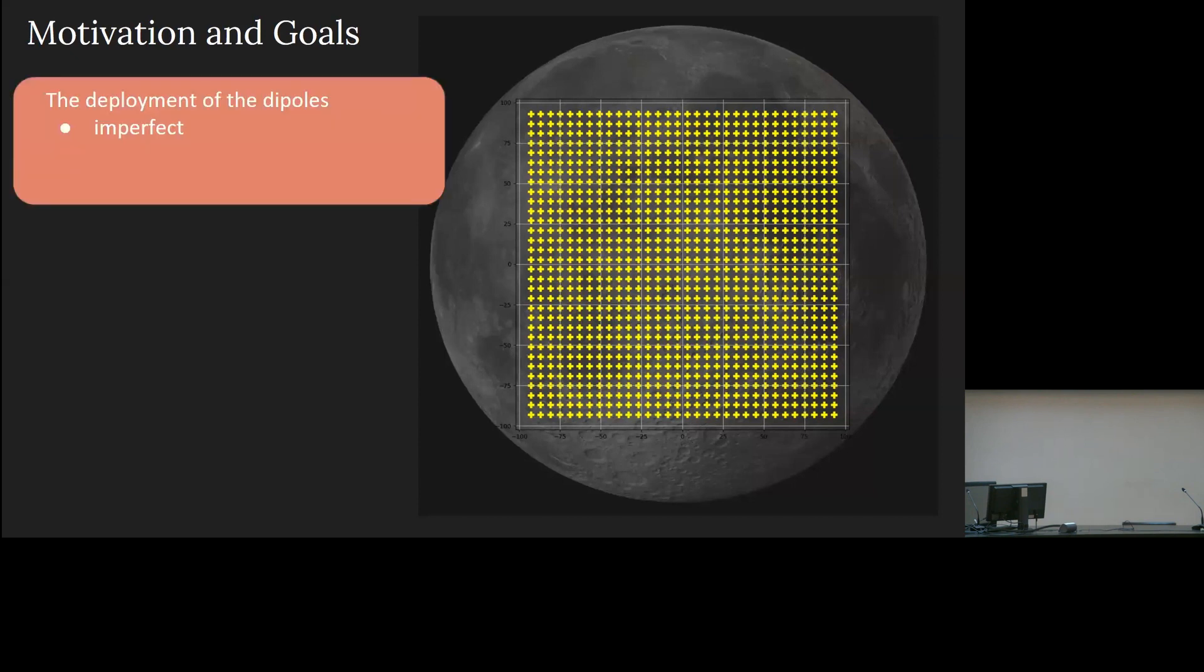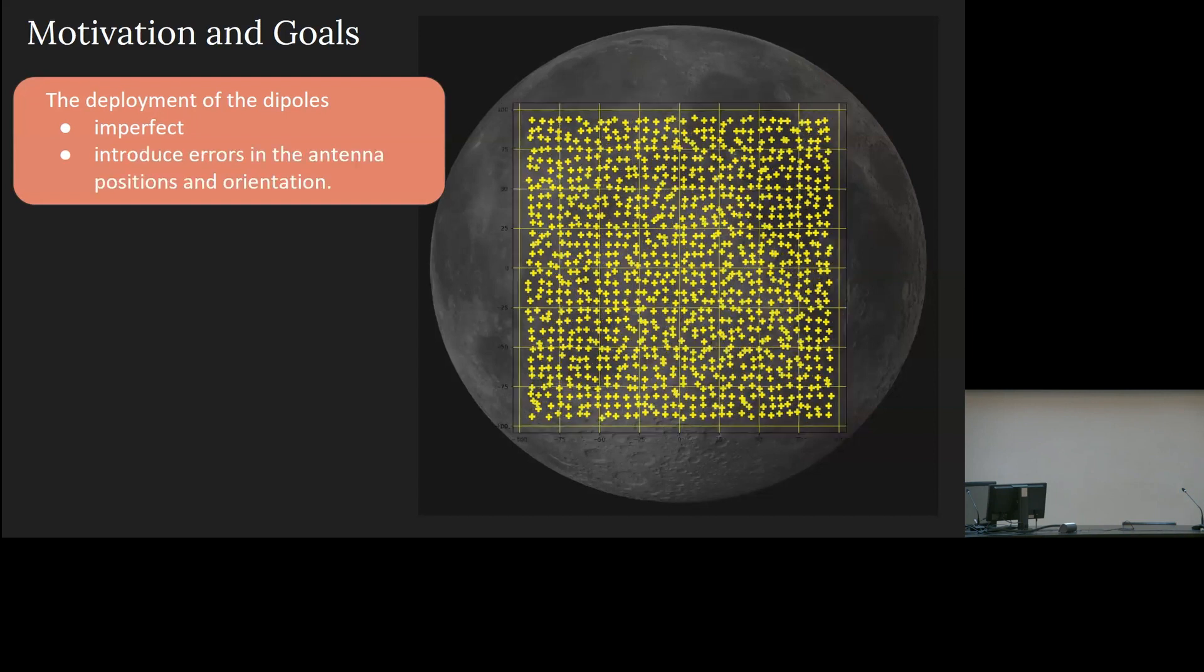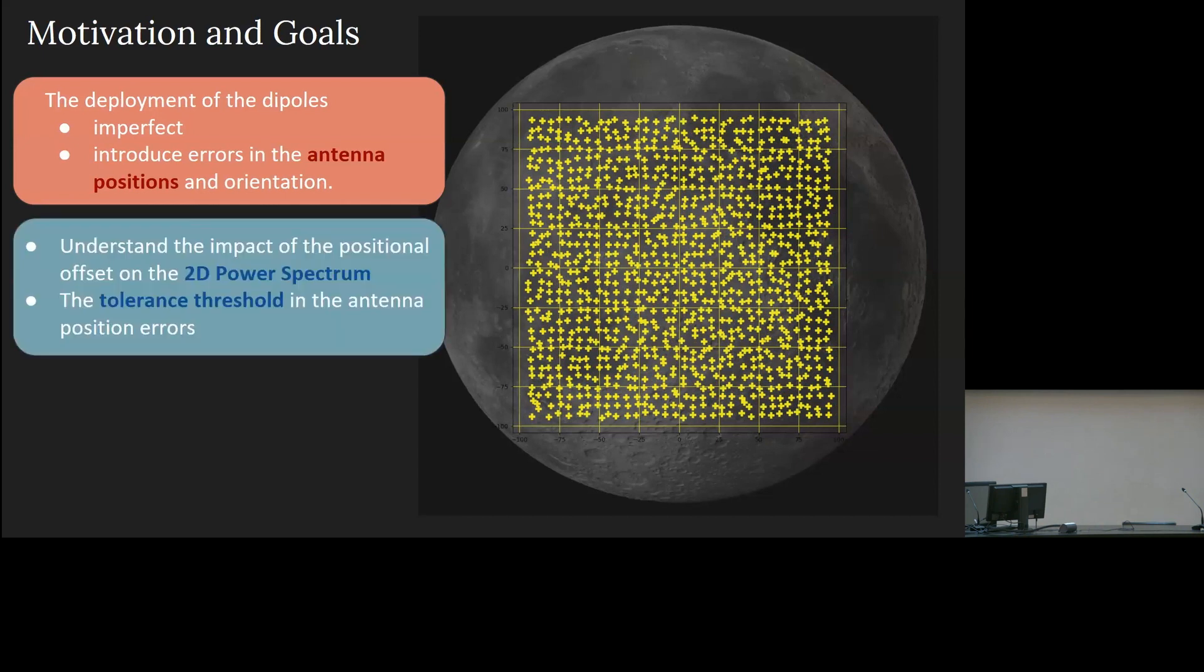And that is where my work comes into picture. We know in realistic scenario that the deployment of the dipoles on the lunar surface might be flawed, and that might introduce errors in the antenna position and orientation with respect to the planned position. And these errors then might get propagated to the data processing chain, and hence it will impact the extraction of the 21-centimeter signal. For my current analysis, I am focusing only on the antenna position offset and trying to understand how it impacts the 2D power spectrum. And here, we need to remember that the final goal is to be able to define the acceptable tolerance level for our given sensitivity goals and how they propagate into the images.